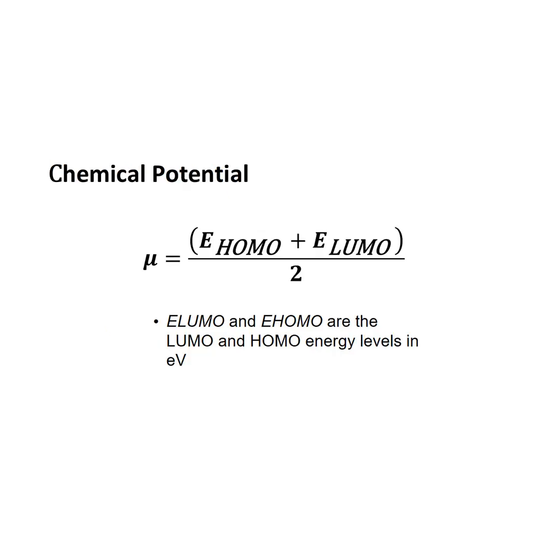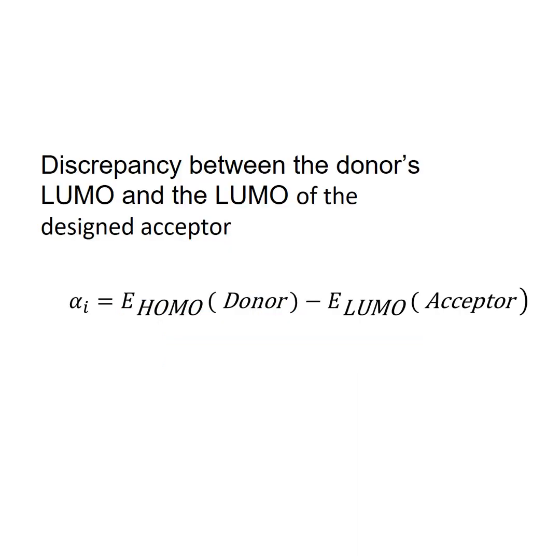Chemical potential. E_LUMO and E_HOMO are the LUMO and HOMO energy levels in electron volts. Discrepancy between the donor's LUMO and the LUMO of the designed acceptor.